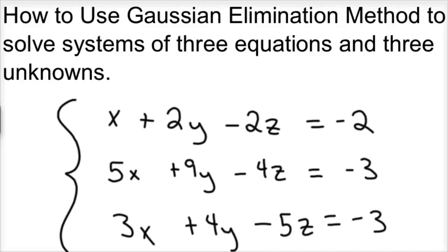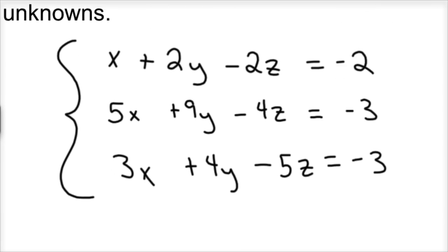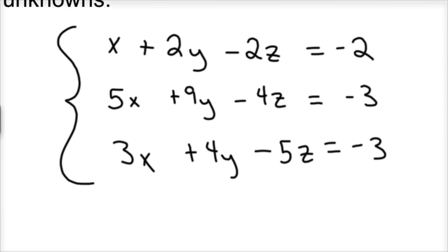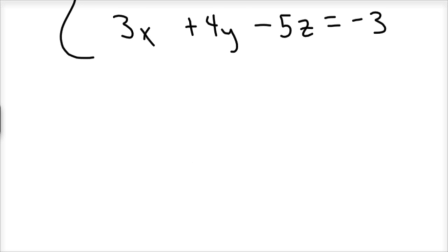So how to use the Gaussian elimination method to solve systems of three equations and three unknowns. To do this problem, first set the three equations and three unknowns into a matrix — a three by four matrix.